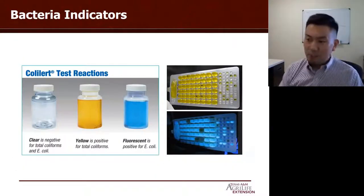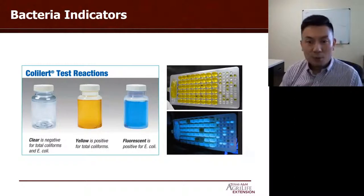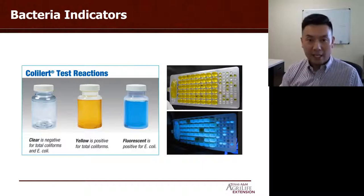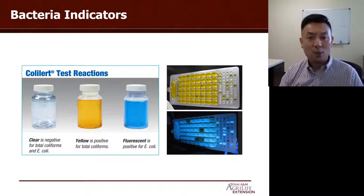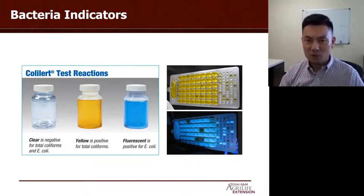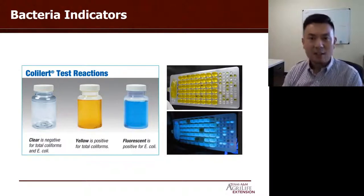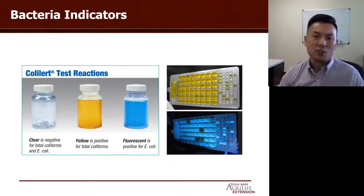Speaking of bacterial indicators, I use total coliform, fecal coliform, and E. coli. These are study-proven to be good indicators. For example, when we detect a really high concentration of total coliform or E. coli, it means other pathogens in our sample are probably at a very high concentration as well. When we do our treatment, if we can reduce those indicators significantly, it very likely means we can reduce the other pathogens too.